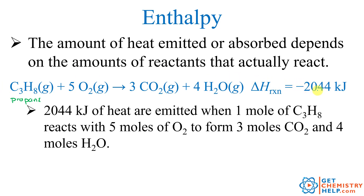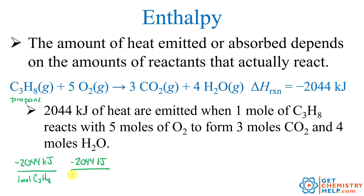We can write conversion factors comparing thermal energy released to moles of either reactants or products. For example, there are 2044 kilojoules of thermal energy released per every one mole of propane. To relate thermal energy to oxygen, it would be negative 2044 kilojoules per five moles of oxygen. As with any conversion factor, you can flip these depending on whether you need kilojoules or moles to cancel.